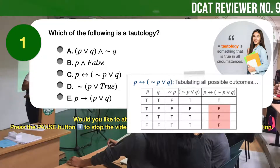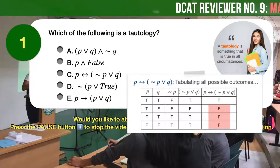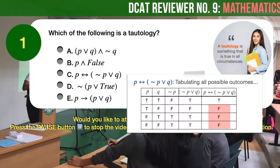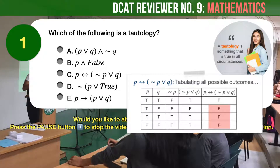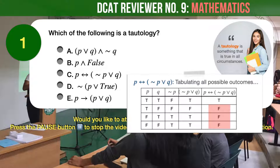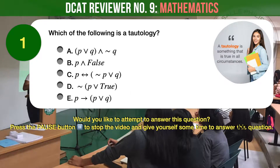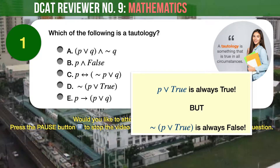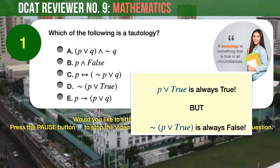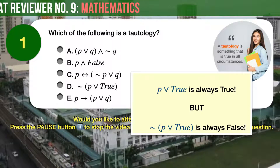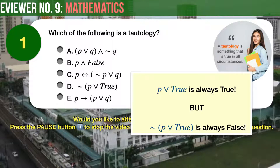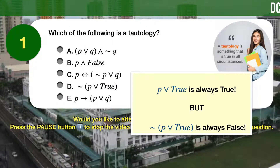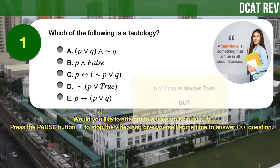We've done the tabulating for you, as shown. As you can see, C results in mostly false outcomes, so it is not a tautology as well. For answer choice D, P or true will always be true. However, since there exists a negation symbol, the statement will always be false and cannot be a tautology.